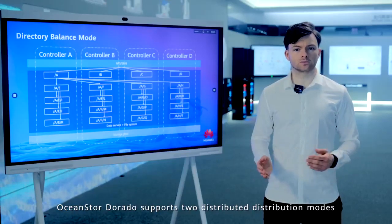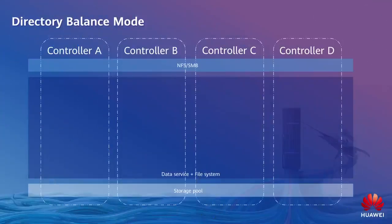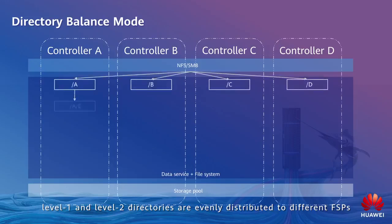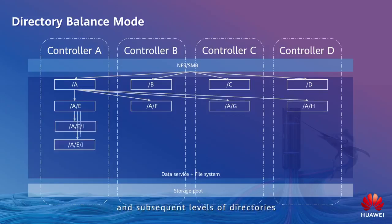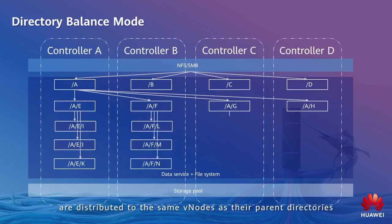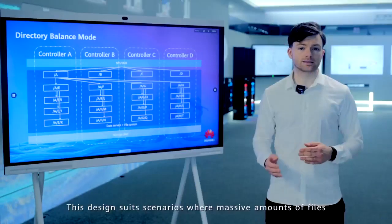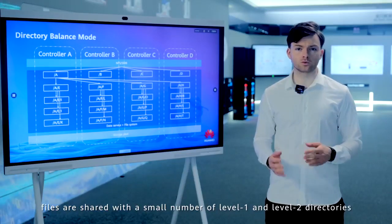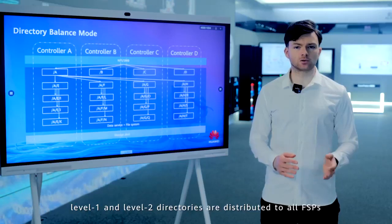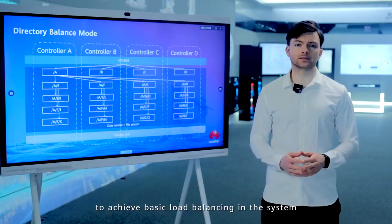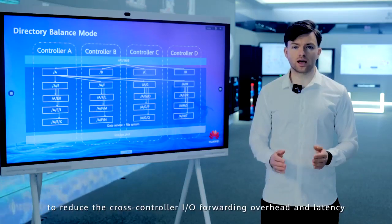OceanStore Dorado supports two distributed distribution modes: balance and performance. The balance mode is more common as it fits most scenario demands. In the balance mode, level 1 and level 2 directories are evenly distributed to different FSPs — that is, the first two levels of directories are evenly distributed to multiple controllers, and subsequent levels of directories are distributed to the same Vnode as their parent directories. You can also set any level of directories to be evenly distributed. Level 1 and level 2 directories are distributed to all FSPs to achieve basic load balancing, and subsequent levels are distributed to the same Vnodes as their parent directories to reduce cross-controller IO forwarding and overhead latency.